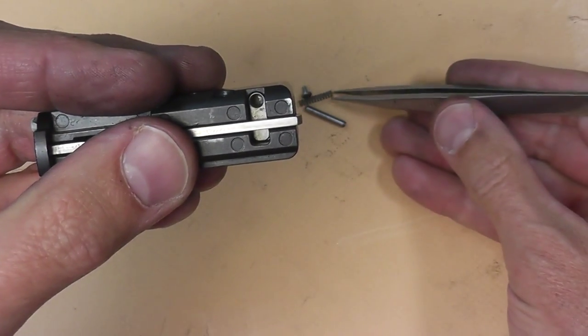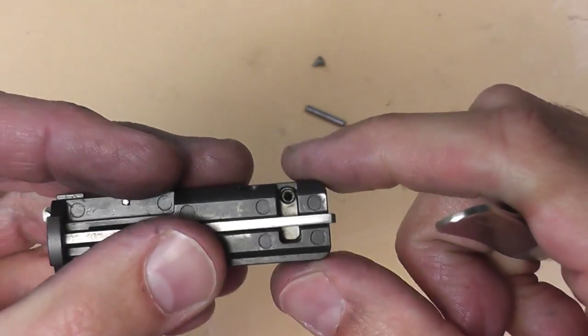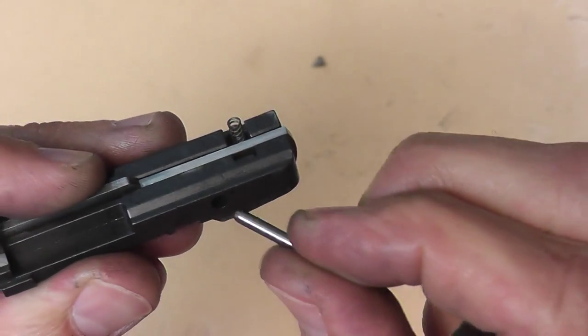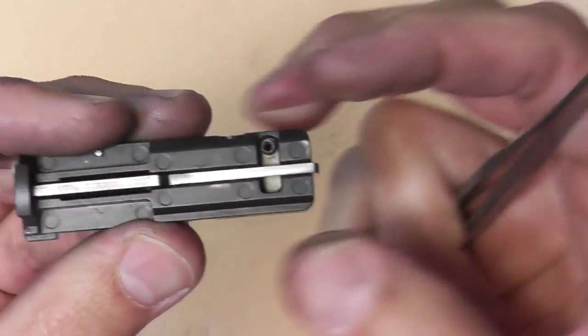So then we'll take our spring, drop it in the top. Oh, and don't forget the little rod that holds the firing pin in place. We'll just push that right through. No tools needed on that one. It just easily fits through.